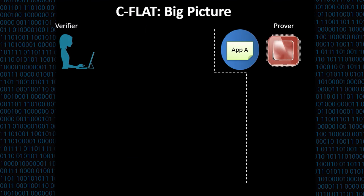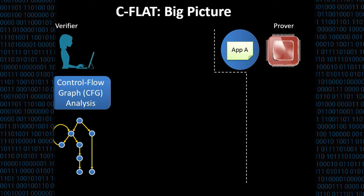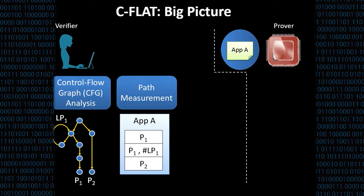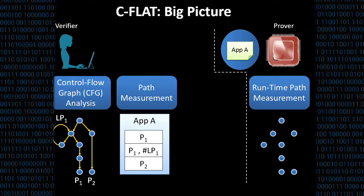The big picture of C-FLAT is as follows. First, the verifier runs a control flow graph analysis based on static and dynamic analysis. He identifies the correct and legitimate paths in this program. For instance, in this example, P1 and P2. He also needs to identify the loops in this program. As you will see in a couple of minutes, identifying loops is crucial for control flow attestation. Then, he measures the paths and stores the valid paths in a measurement database. Here in our example, we have P1 and P2 and also the paths including the loop and the number of loop iterations. Then the program is executed on the prover side.